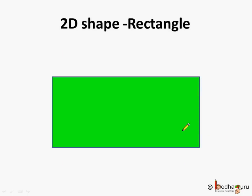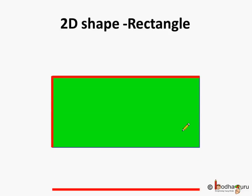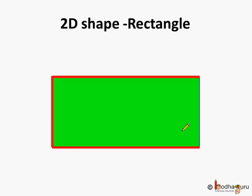What is this? This is a rectangle. Like a square it has one, two, three and four sides. It has four sides and how many corners are there? One, two, three and four. Four corners. So a rectangle has four sides and four corners.